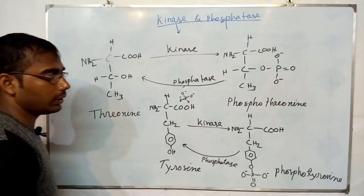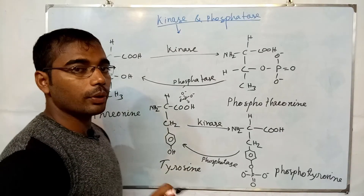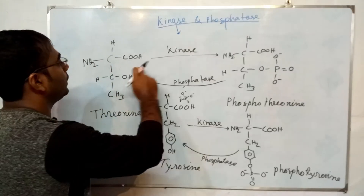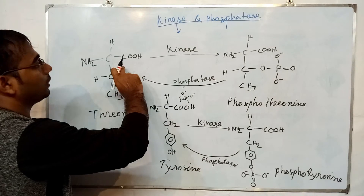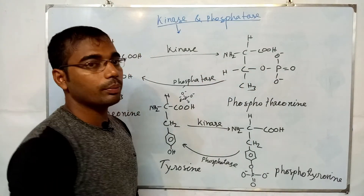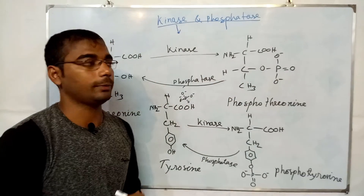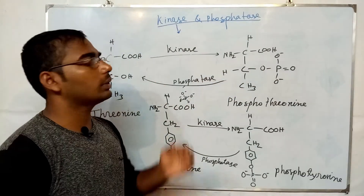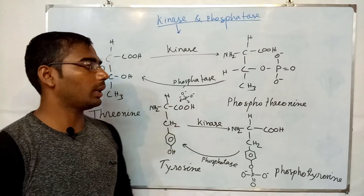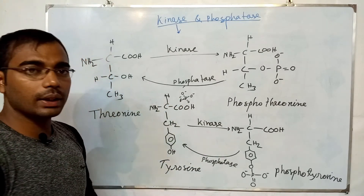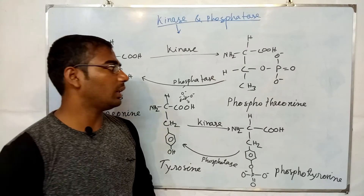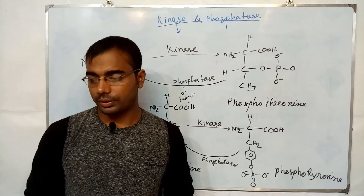This process of removing the phosphate group is known as dephosphorylation, and in the case of kinase, the process of adding the phosphate group is known as phosphorylation. The phosphatase enzymes are also very essential for cell signaling, regulation of the cell cycle, and many other cellular events.